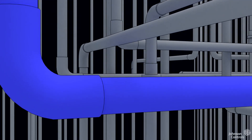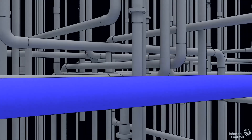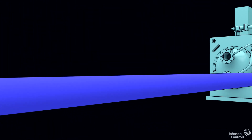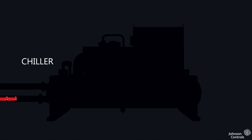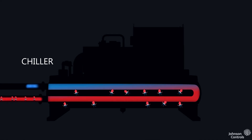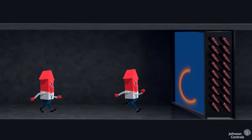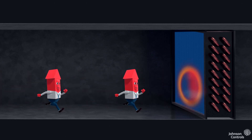This air returns to the office at this lower temperature, ready to move more BTUs. Mr. BTU and company, however, are now rafting along in the chilled water, traveling inside piping to a large piece of equipment called a chiller. This specialized machine is designed to remove BTUs from the chilled water, which then cycles back to the air handler to pick up more of Mr. BTU's pals.